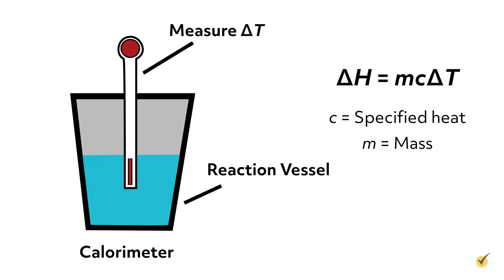To experimentally measure the change in enthalpy for a reaction, we could run a calorimetry experiment. We could measure the change in temperature during the course of the reaction, and then, using the specific heat capacity and mass of the substance, could convert that temperature change to the change in enthalpy.